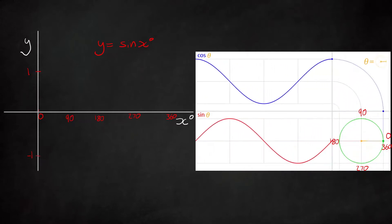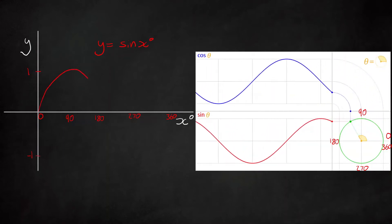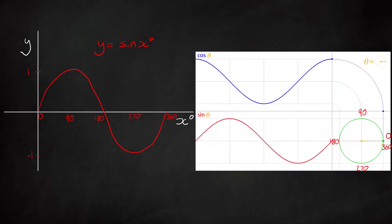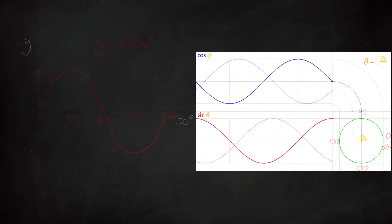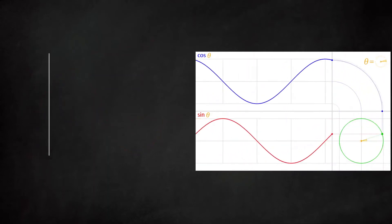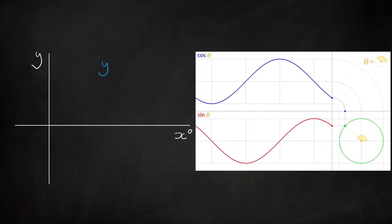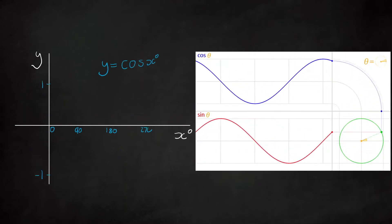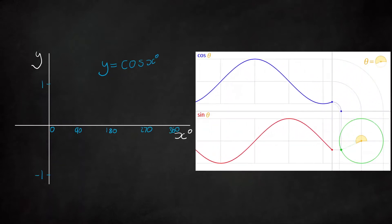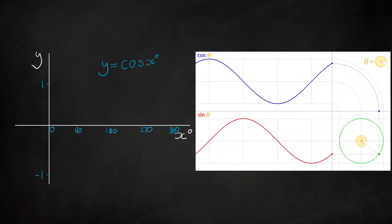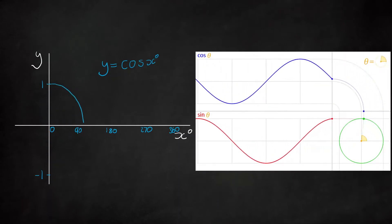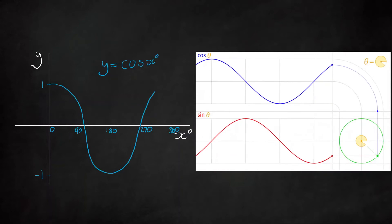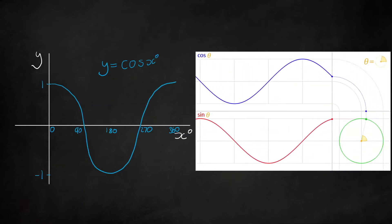You'll notice that indeed the sine graph is the same shape as plotted out in the animation. We can do the exact same for cos — we get our cos graph ready and plot it from 0 to 360 again, noting the maximum and minimum are 1 and minus 1, and you can see it plots out the correct shape just as in the animation.